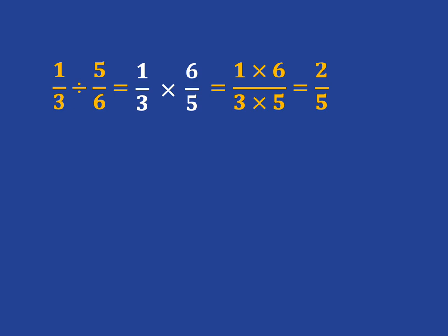So let's recap that new step. In that new step, we keep the first fraction the same, we flip the second fraction, and then we change division to multiplication. And people quite like to remember this by saying KFC.